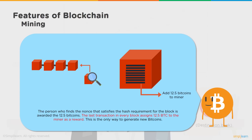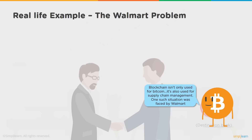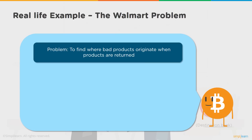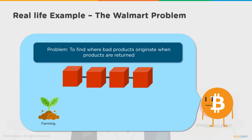There is no other way Bitcoins are generated. Bitcoin's supply is capped at 21 million; as of today approximately 18 million have been mined, leaving around 3 million. The mining reward has been halved over time — from 25 Bitcoins, to 12.5, and will reduce to 6.25 as the supply diminishes. Blockchain isn't only used for Bitcoin — it is also used for supply chain management. The exact problem for Walmart was to find the origination of a bad product in the supply chain when products are returned.